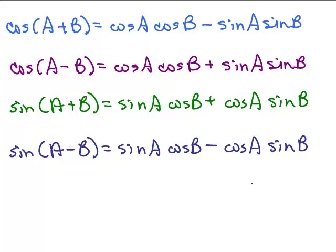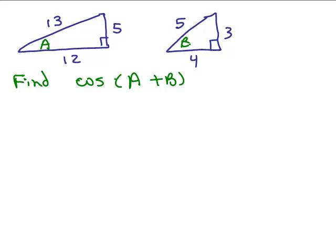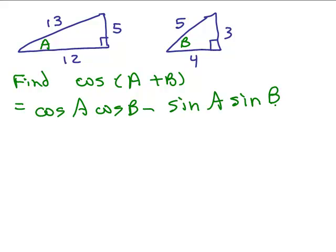Let's do an example using one of these formulas. Here are two right triangles — the 3-4-5 right triangle and the 5-12-13 right triangle. We have two angles a and b. We want the cosine of a plus b, which looks like it's a little less than 90 degrees if you put those two angles together. From the formula, cosine of a plus b equals cosine a cosine b minus sine a sine b.